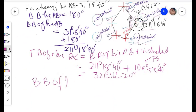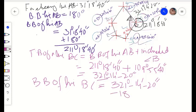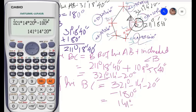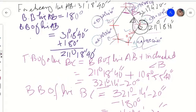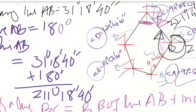To find the back bearing of line BC, we subtract 180 degrees from the forebearing of BC because 321 is greater than 180. The back bearing of line BC equals 141 degrees 14 minutes and 20 seconds. We will then add the included angle C, which is 94 degrees 38 minutes and 50 seconds, to get the forebearing of line CD.